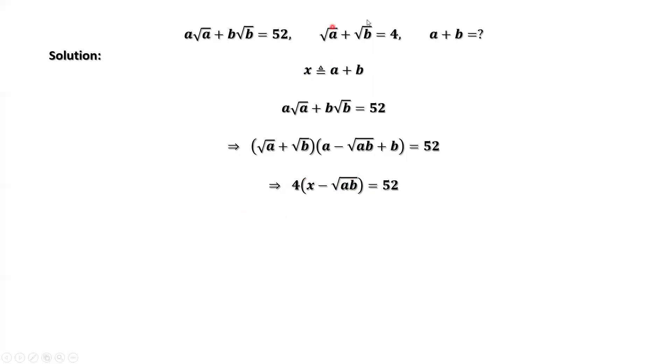We use the second given condition. Square root of a plus square root of b equals 4. We square both sides. Then we have a plus 2 square root of ab plus b equals 16.